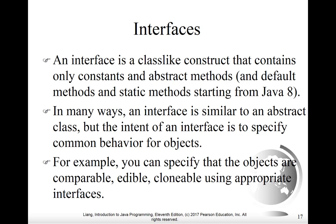An interface is described to be a class-like construct. Whereas abstract classes contain abstract methods, interfaces do have that in common. But the purpose of an interface is to capture common behavior for objects — often described as common properties. For example, all the different objects that can be compared could be classed as having the Comparable interface.